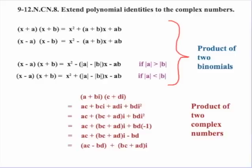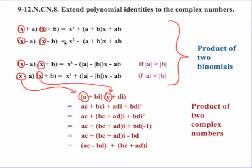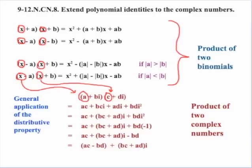We change the order around, using our commutative and associative properties to put this in the correct format for representing a complex number. So ac minus bd would be the real part, and (bc plus ad)i would be the imaginary component. Notice that with the product of two binomials, we always had the same first term in both binomials. But with two complex numbers, the real parts are not the same, so we can't apply that binomial pattern directly. The best we can do is recognize that both cases use a general application of the distributive property.